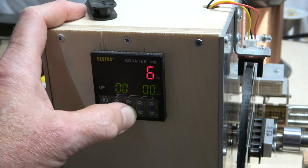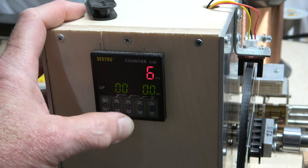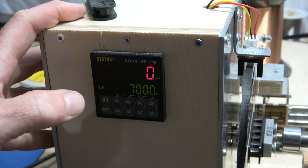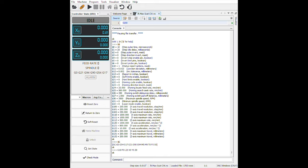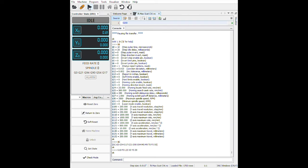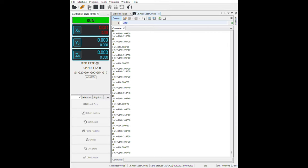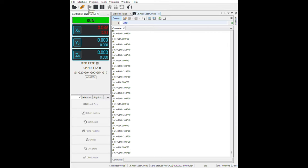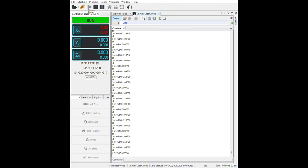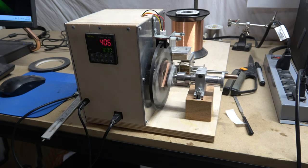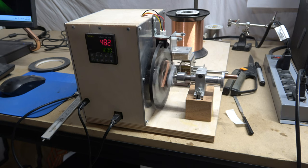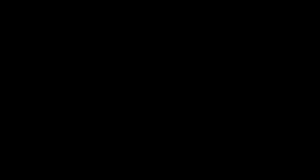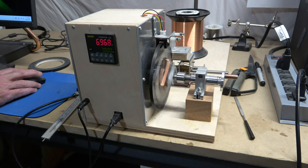The plan was to wind 7,000 turns of 43 gauge wire onto the bobbin, so I programmed the counter to stop at exactly 7,000 turns. Now I can start to wind my coil by sending the G-code file that I wrote earlier to the CNC winder using universal G-code sender. Winding a coil with 7,000 turns of wire takes about five and a half minutes, and when the counter reached 7,000 turns, the winder automatically shut off.